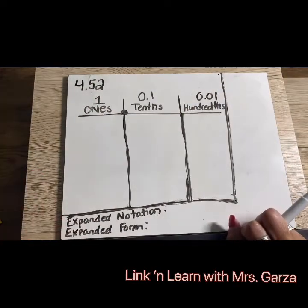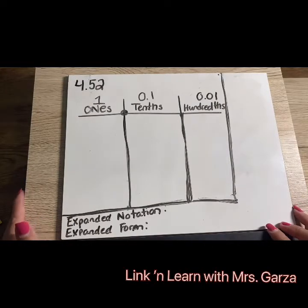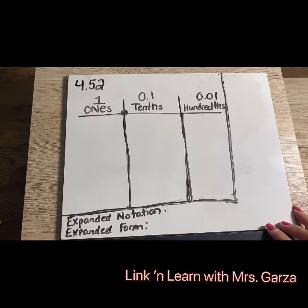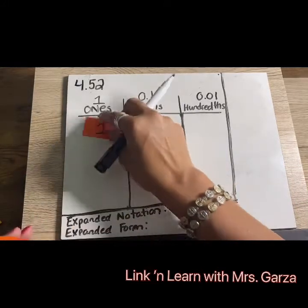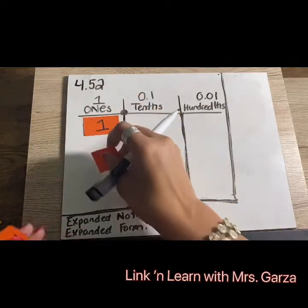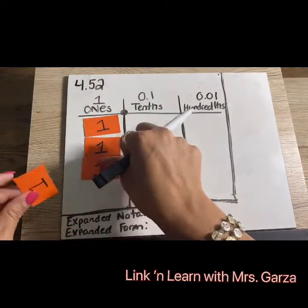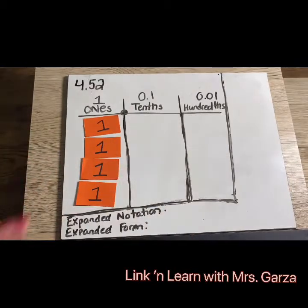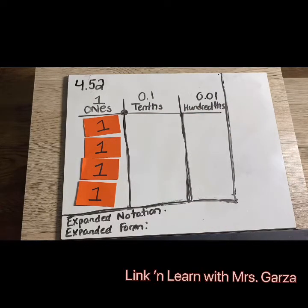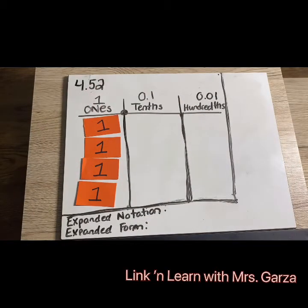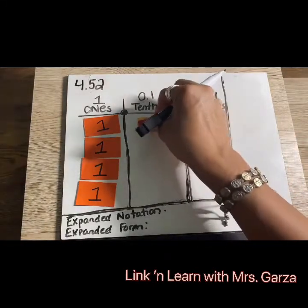Let's go ahead and show 4.2 in relation to using concrete models. If I wanted to represent four, I need four ones. So here's my one, two, three, and four — four dollars, four wholes. If I have tenths, how many tenths do I have? The value there is five. So not five cents, but it's five tenths — think of these as dimes. Here's one dime, 10. Here's a second dime, 20.